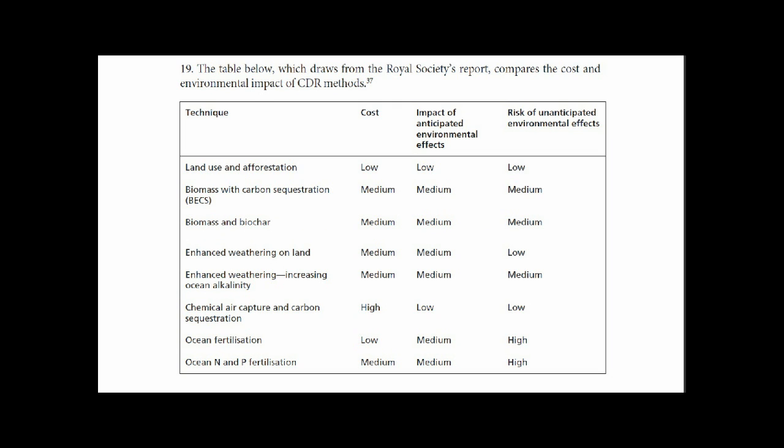Now we have a table drawn from the Royal Society report, which compares the cost and environmental impact of CDR methods. The columns cover: the technique, the cost, the impact, anticipated environmental effects, and risk of unanticipated environmental effects. Ratings go from low, medium, to high.